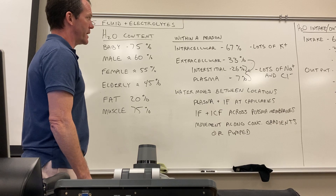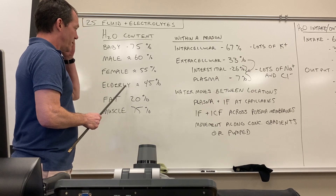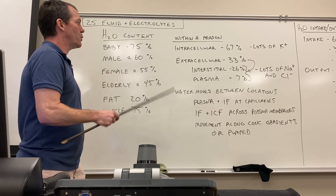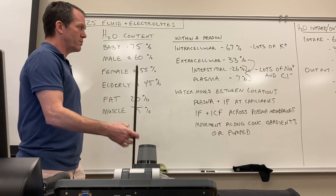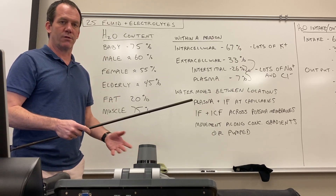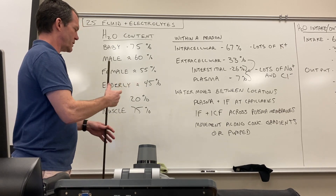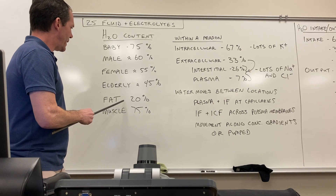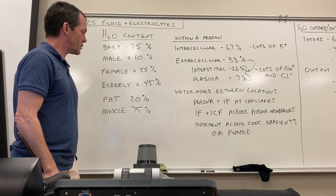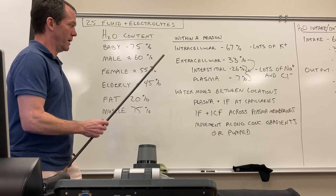First, let's talk about how much water we have in us and where it is. When you were a baby, you were about 75% water. When you get to be elderly, you'll go down to about 45%. As an adult, you're somewhere in between. Males tend to have greater muscle mass — a lean male will have about 60% water of their body mass. So if you weigh 200 pounds, 120 of it is water. Females are slightly less due to lower muscle density. Fat has only about 20% water, while muscle, especially if fully hydrated, is about 75%.